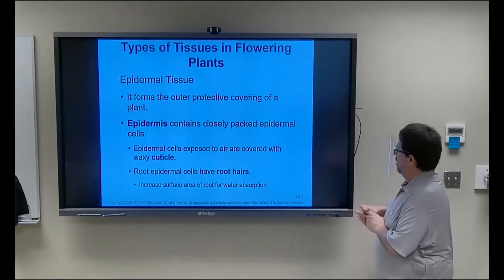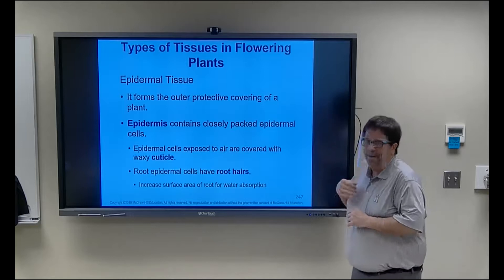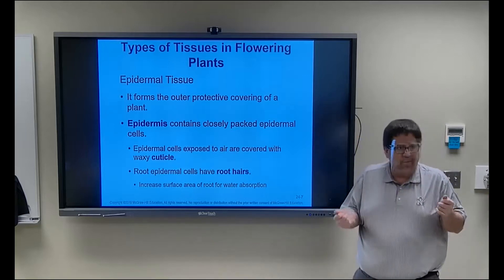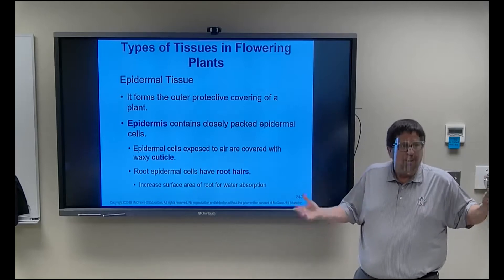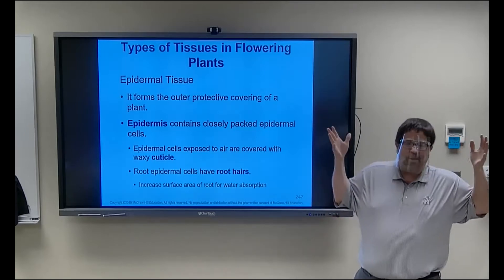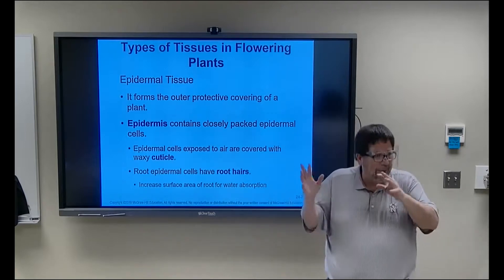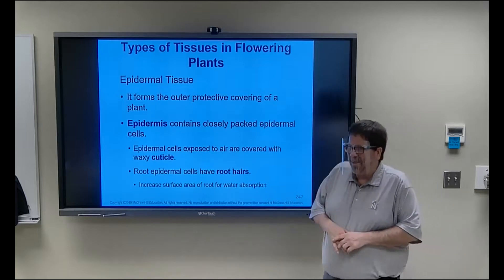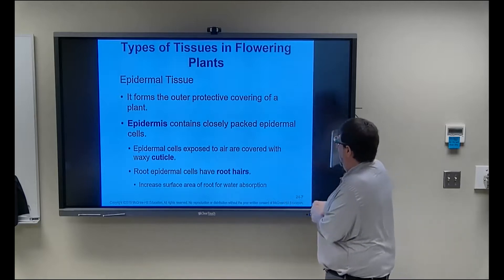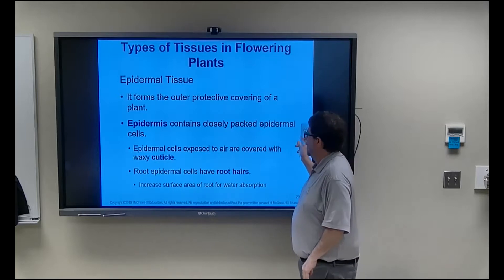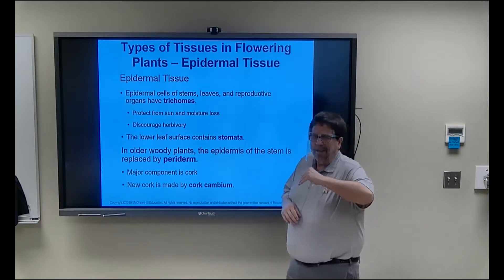The epidermis has a waxy coating called a cuticle — like those evergreen shrubs. It's like wax on your car paint, just for protection. Without the cuticle it would be like green Kool-Aid bleeding the chlorophyll out. That waxy covering keeps them from drying out. Root hairs increase the surface area so they can absorb more water — that's another outgrowth of the epidermis.